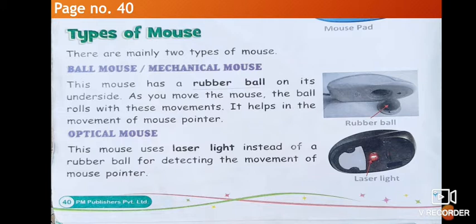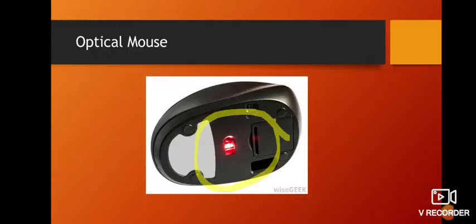The optical mouse uses laser light instead of a rubber ball to detect the movement of the mouse pointer. As you can see in the picture, at the place of the ball, this mouse has a laser light which helps in the movement of the mouse pointer on the screen. Because it uses laser light and not a ball, it is called an optical mouse.